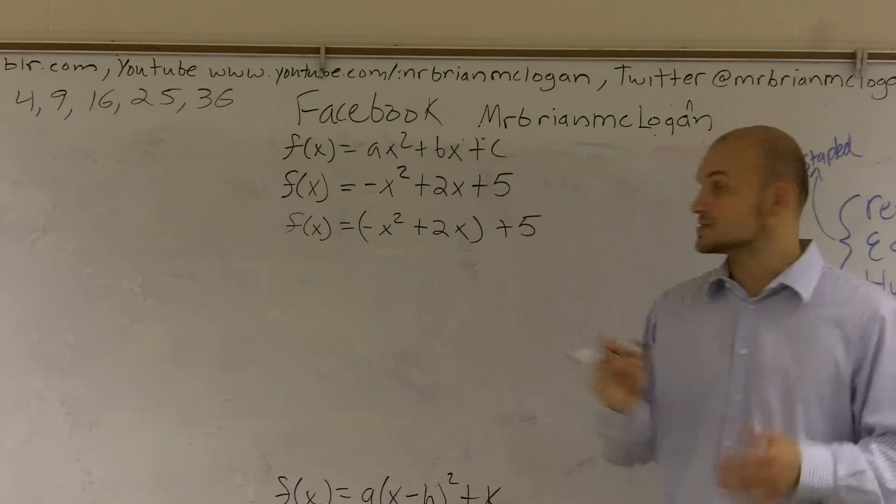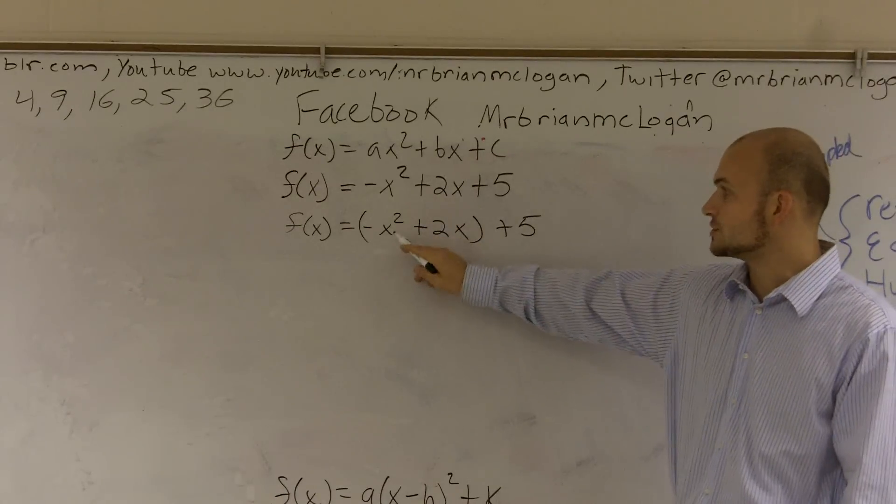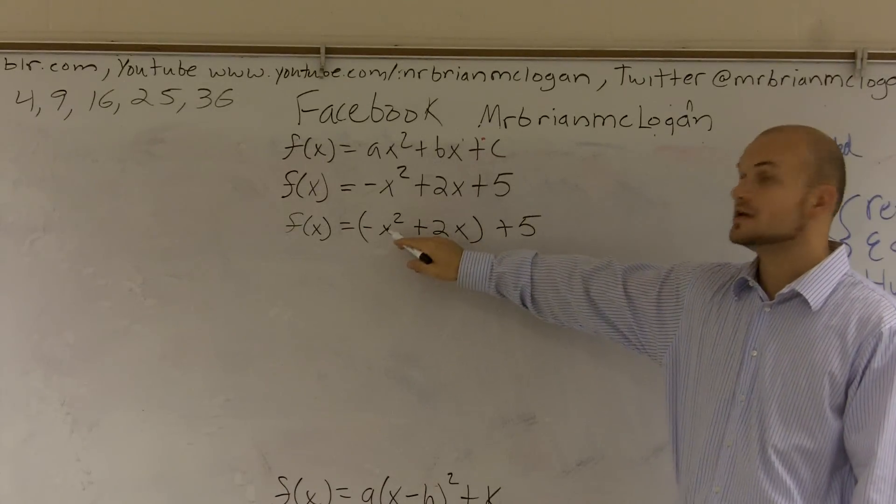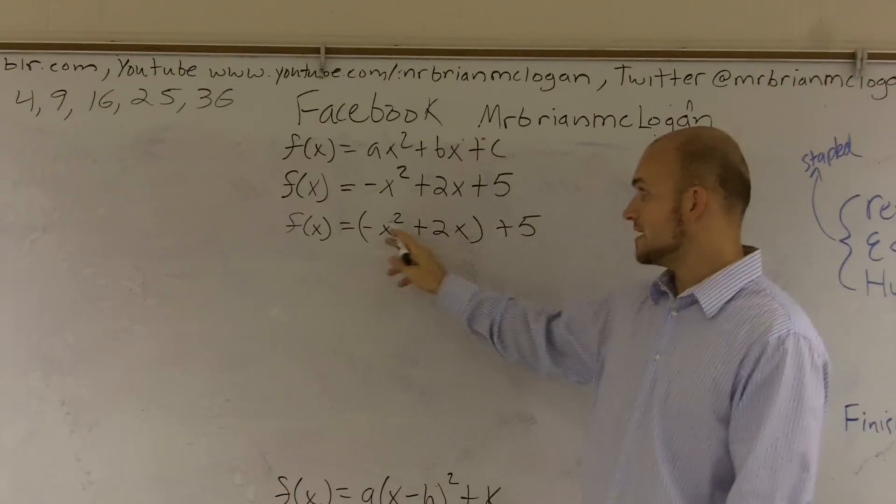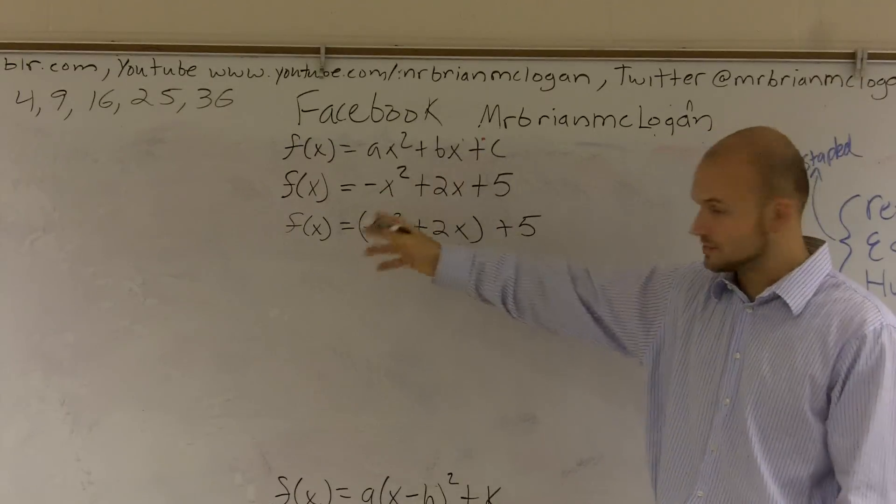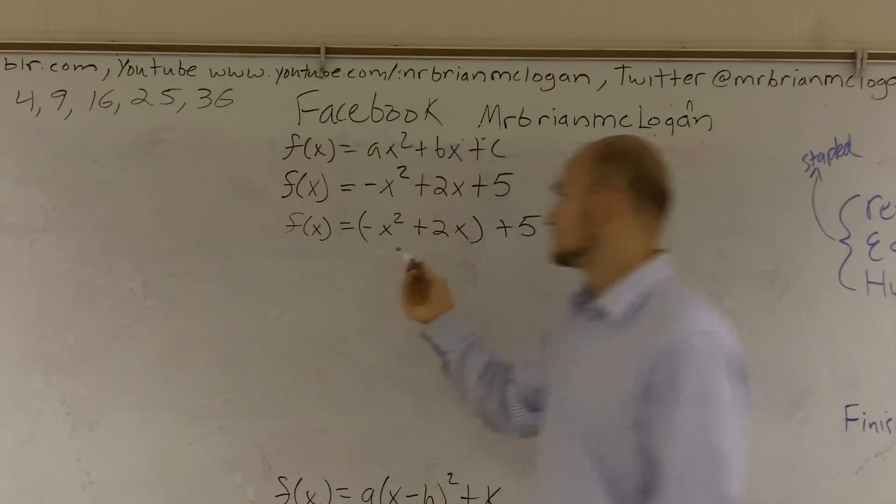So what I'm going to do is to complete the square, the first thing I have to do is I have to make sure that there's nothing in front of the x. So I'm going to factor out a negative whatever's in front of there. If there was a 2, you'd factor out a 2. If there's a negative 1, which this negative sign is, you'd factor it out.